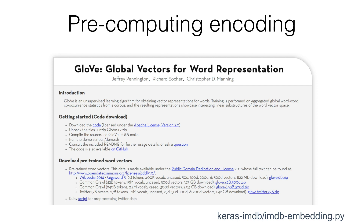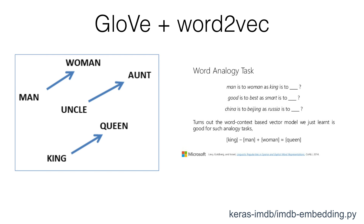If we don't want to calculate the embedding ourselves, we can actually use some pre-computed embeddings. Word2Vec is a famous one. Today we're going to use the GloVe embedding, generated by Stanford on a huge set of data, and it has some amazing properties. If you take the actual embedding for 'woman' and subtract the numbers encoded as 'man', then add the numbers for 'king', you actually get a set of numbers very close to the numbers for 'queen'. This shows that these embeddings are actually encoding semantic information about words, and using these pre-generated embeddings can often make your models perform even better than calculating embeddings yourself.